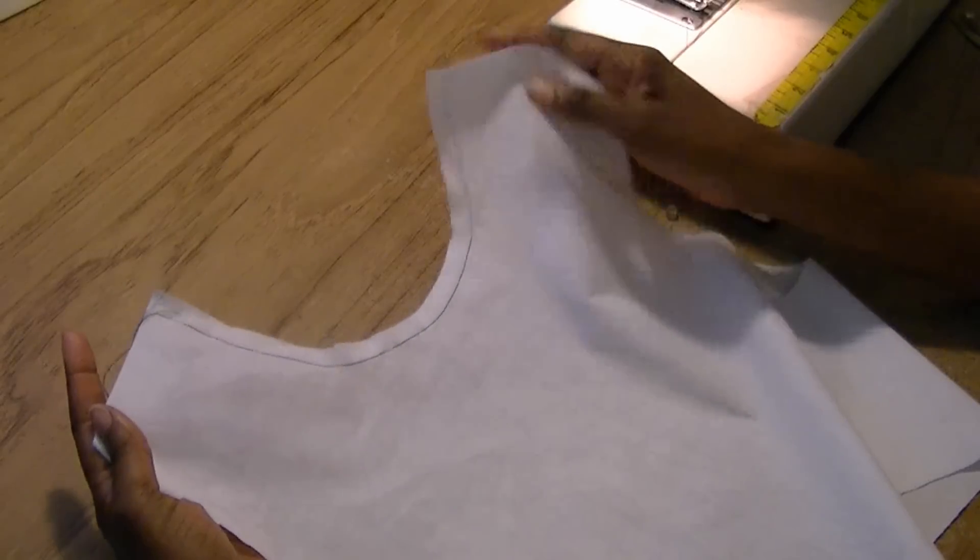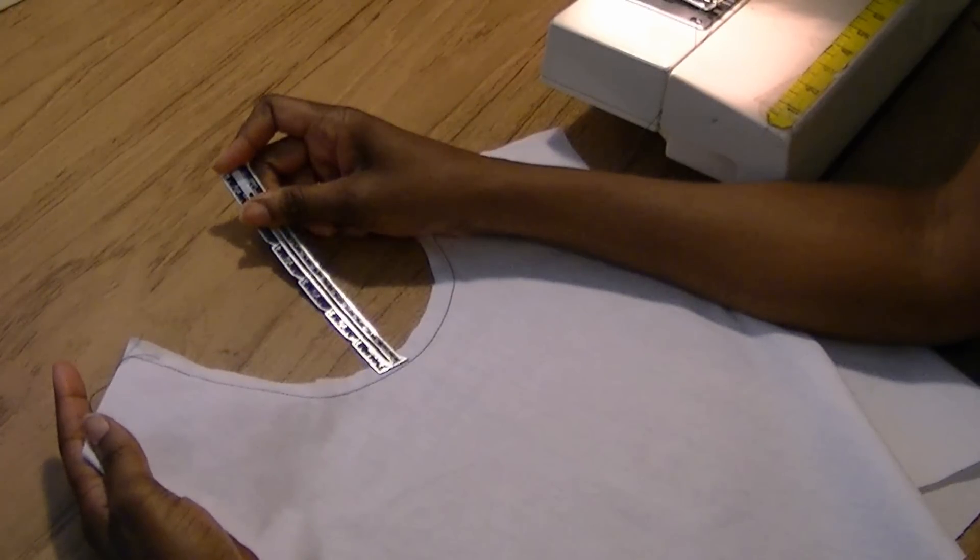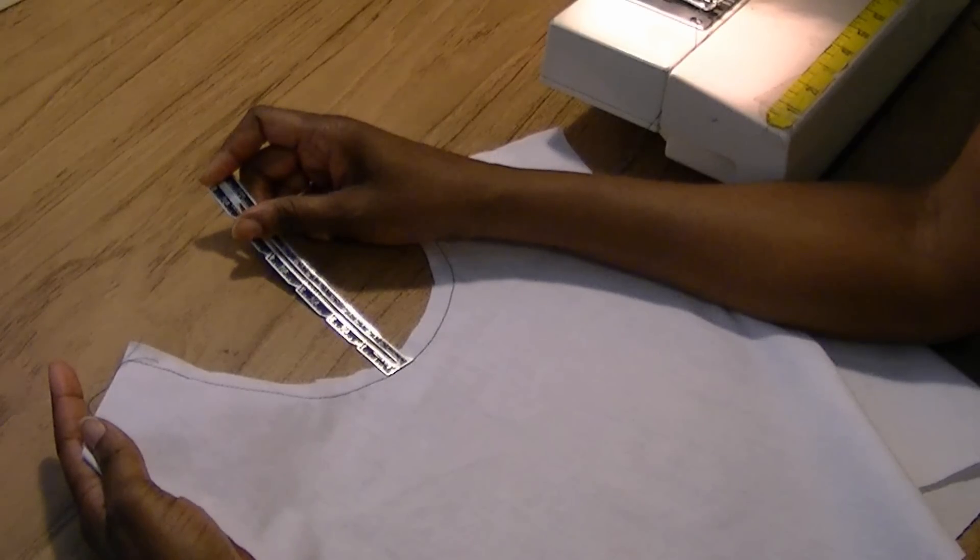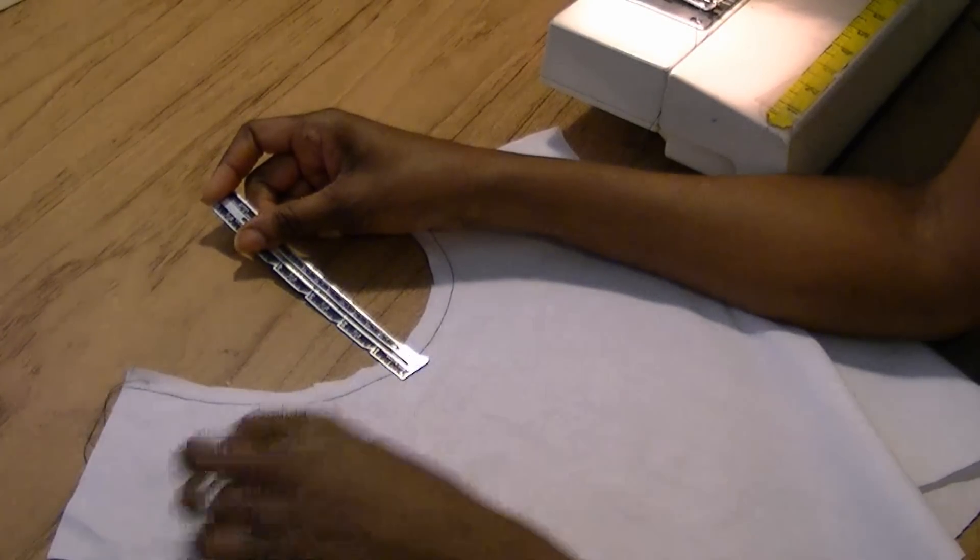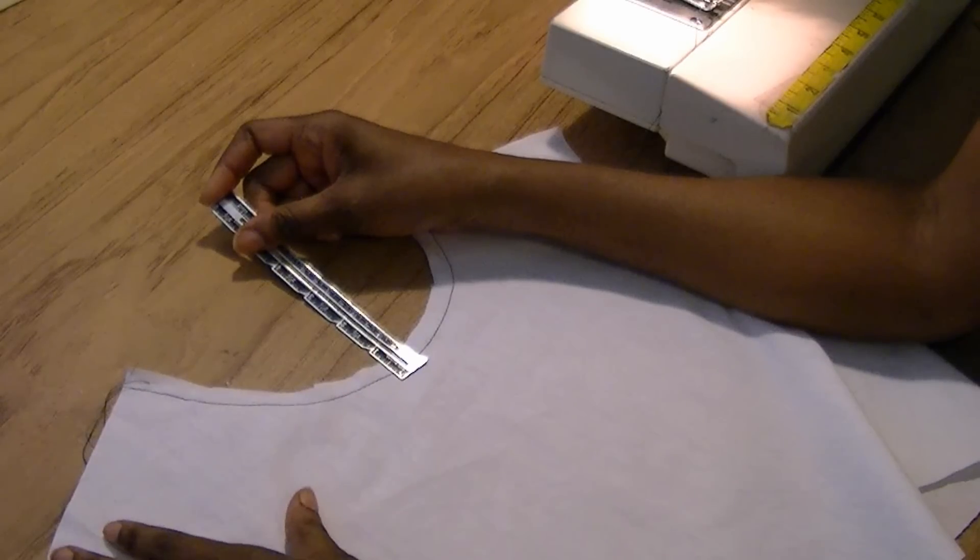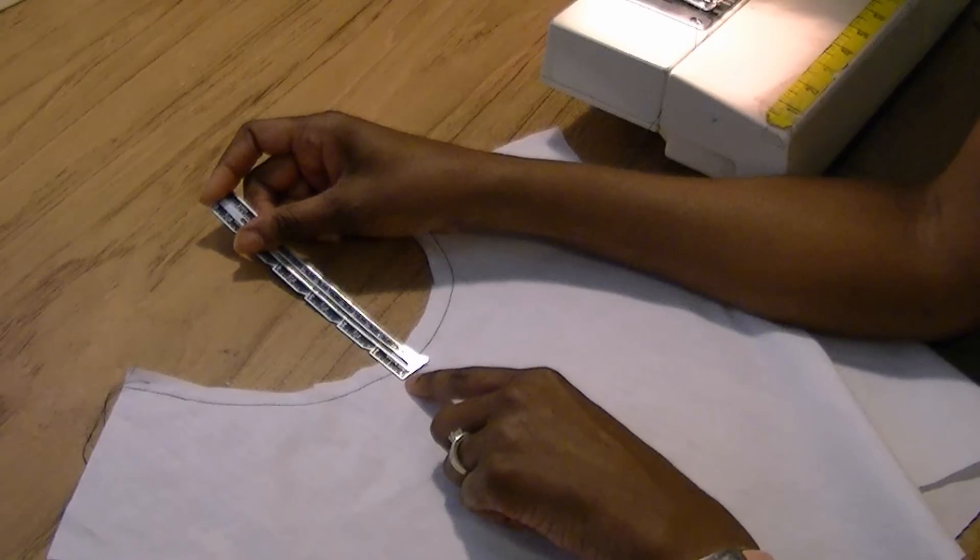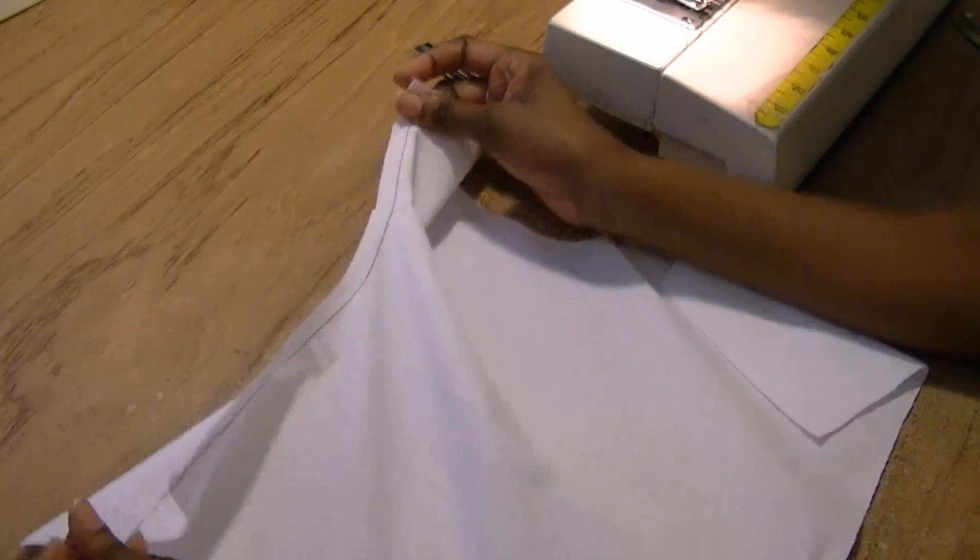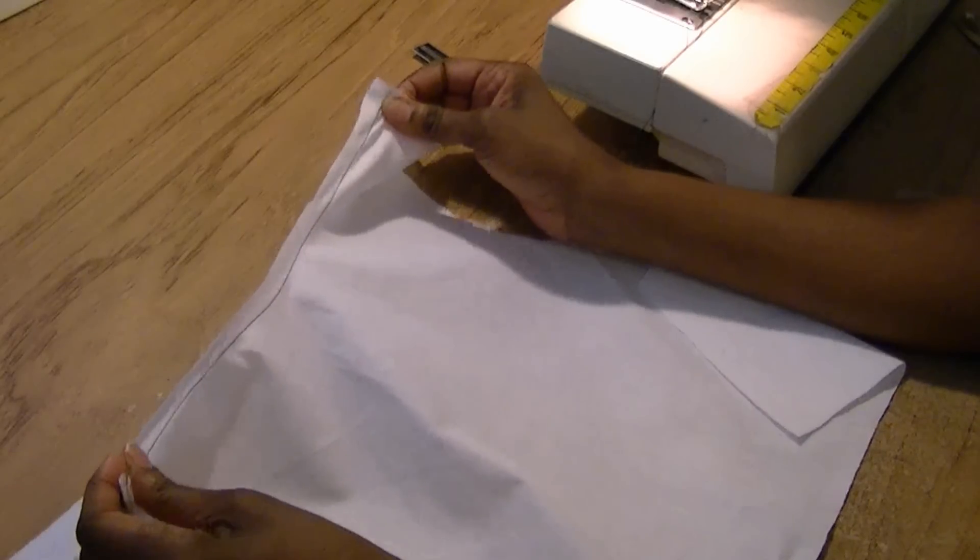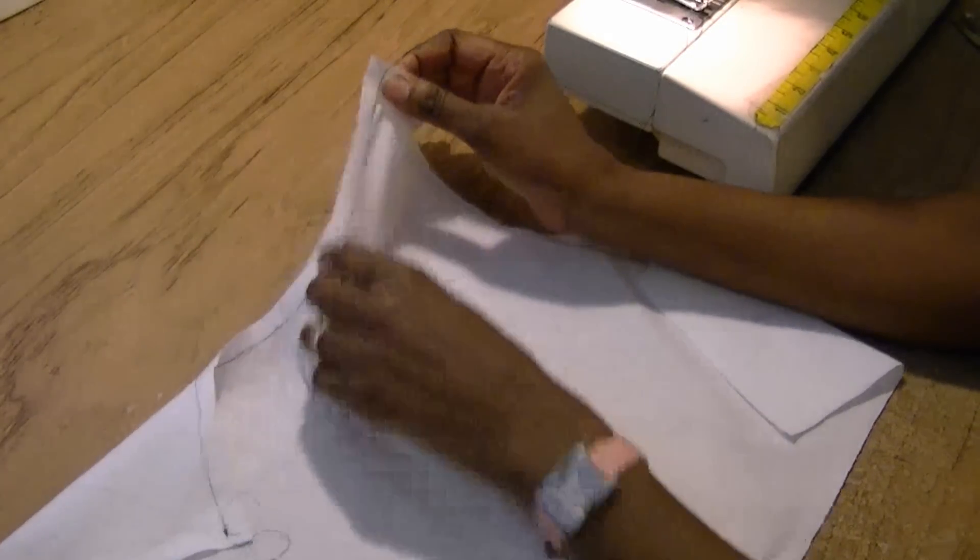So here is the stay stitch. My stay stitch seam is about 3 eighths of an inch and if I sew to connect my collar or finish off I would do a 5 eighths, and as you see the 5 eighths will fall just below the 3 eighths and this prevents your garment from being stretched out of shape in this area.